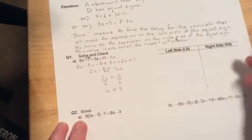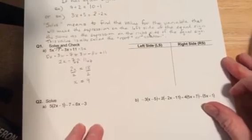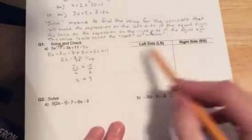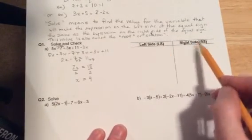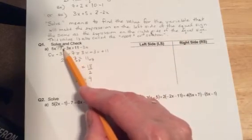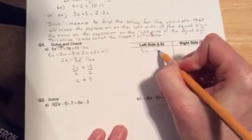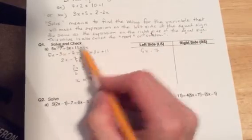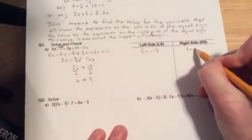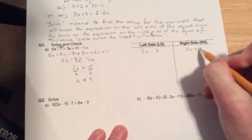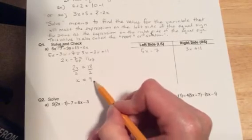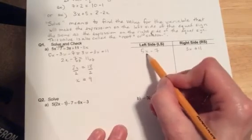So this is the check part here. Depending on who you had last year and how they've set this up, I usually just do it as a T-chart, left side and right side. On the left side of the equal sign we originally had the expression 5x - 7, and on the right side we originally had the expression 3x + 11. What we do to check is we take our solution that we found and substitute it in for the x.